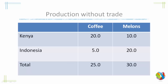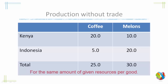Here we're looking at production and consumption without trade. As we can see, they both produce coffee and melons. Looking at the coffee column, with the same amount of resources, Kenya produces 20 units of coffee and Indonesia only produces 5 units of coffee. With the same amount of resources, Kenya can produce 10 units of melons and Indonesia produces 20 units of melons. So clearly, Kenya is far better at producing coffee than Indonesia, and Indonesia is far better at producing melons than Kenya.